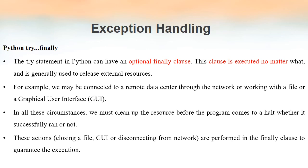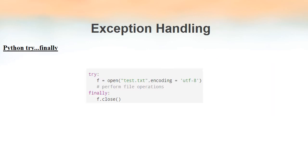Even if an exception is raised and not handled, the program terminates, but the finally clause will still execute. This clause is generally used to release external resources. The finally clause is optional, not compulsory. We use it when we want to guarantee that certain lines of code execute regardless of whether an exception is raised, handled, or not raised at all.